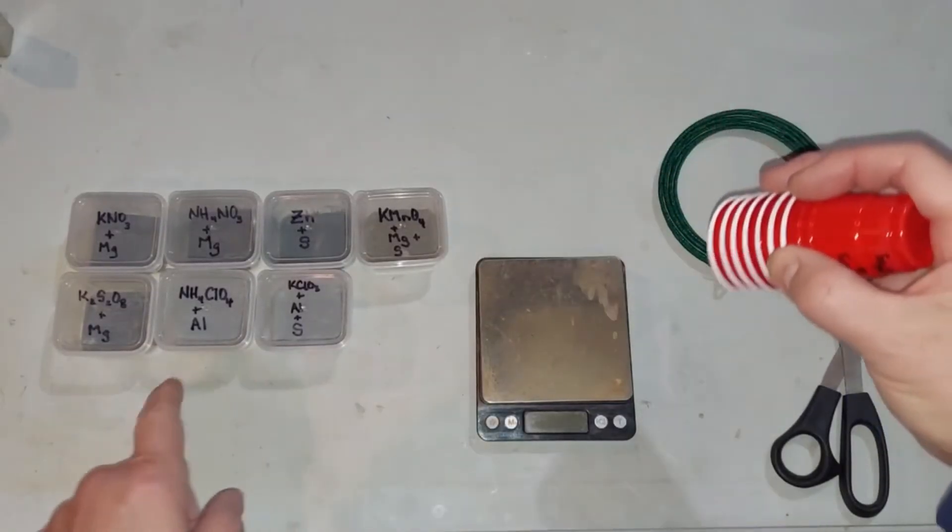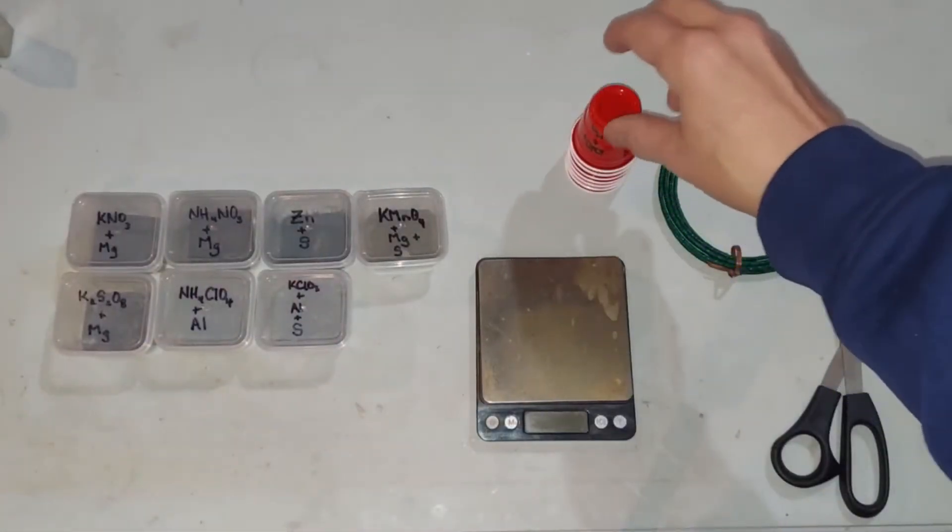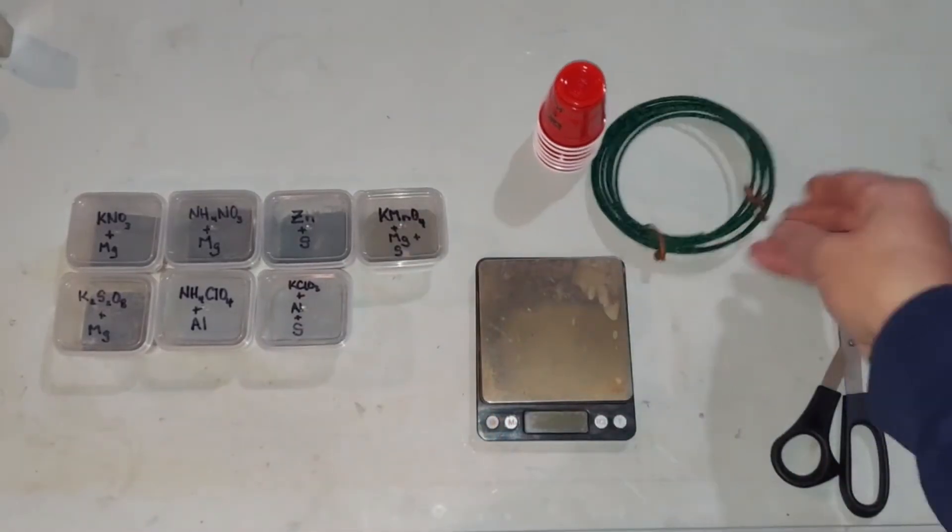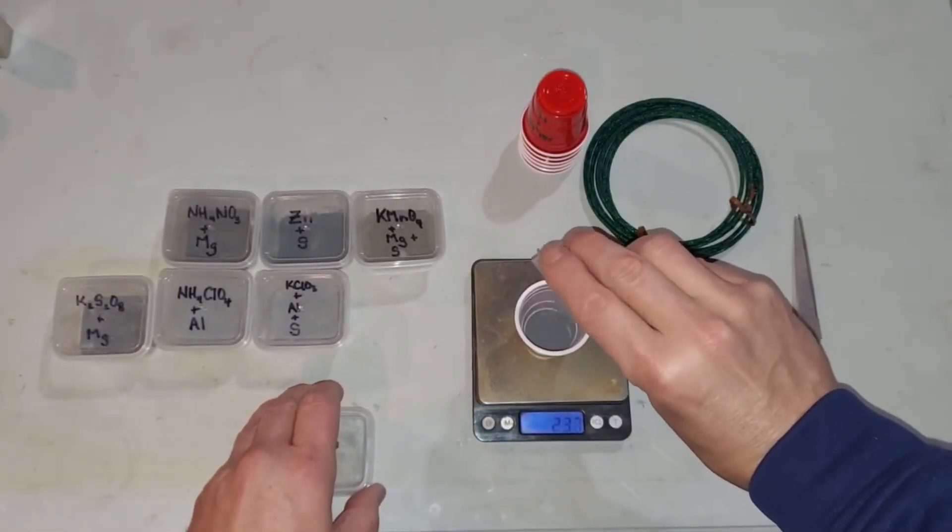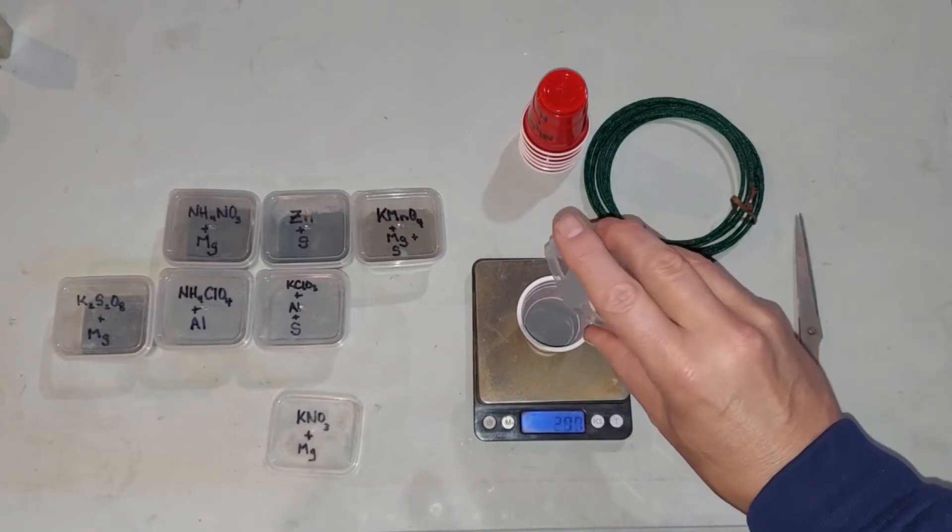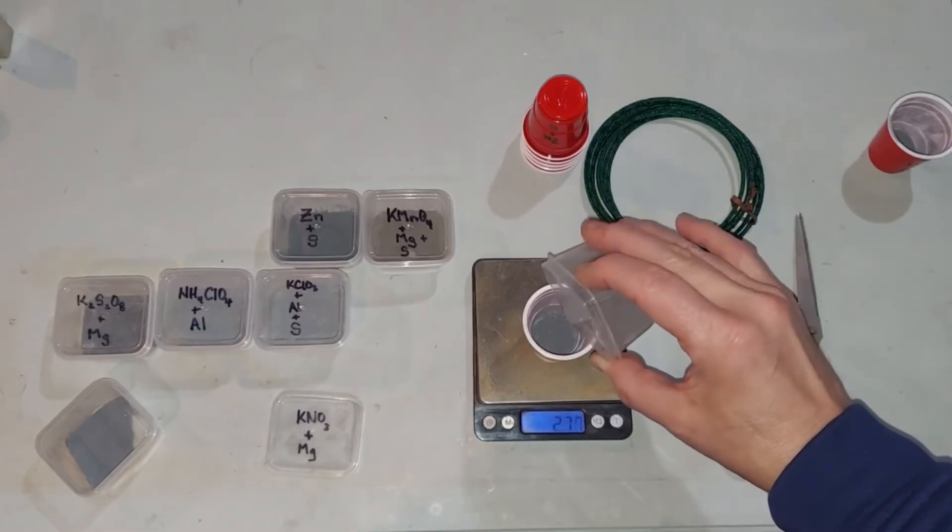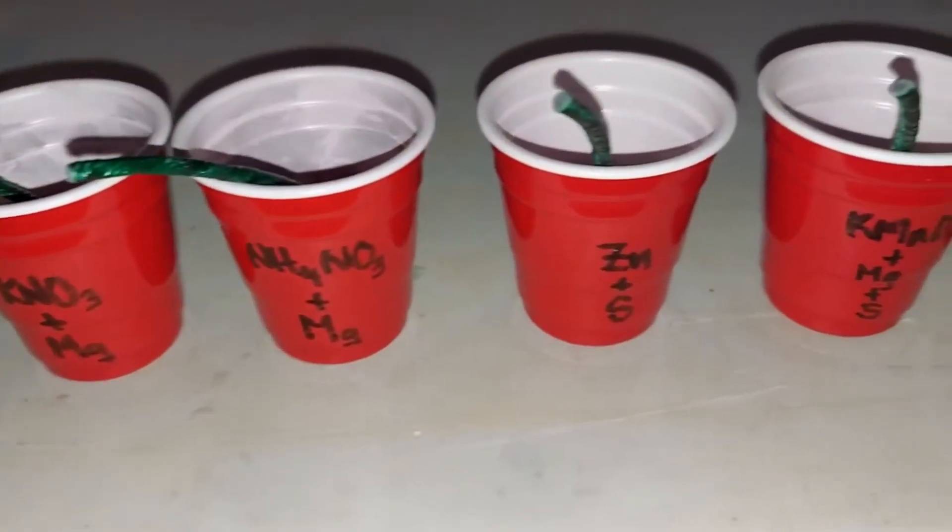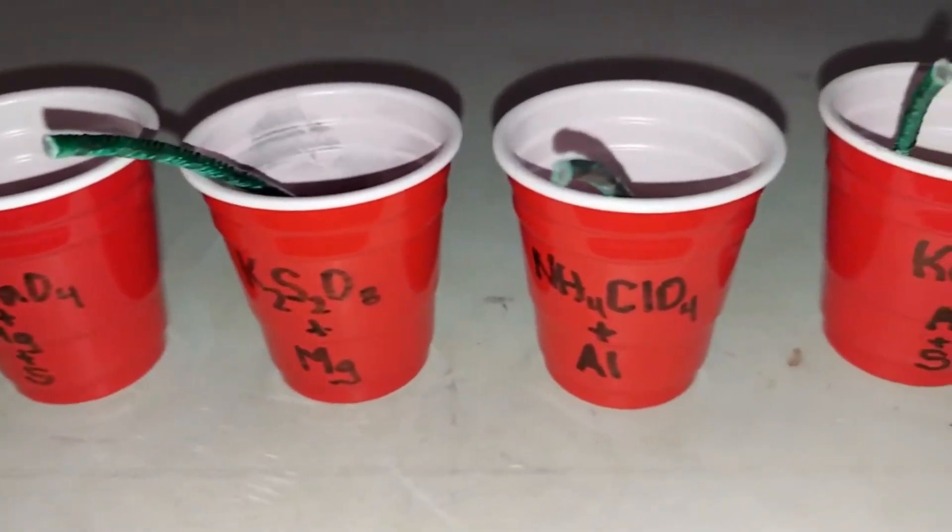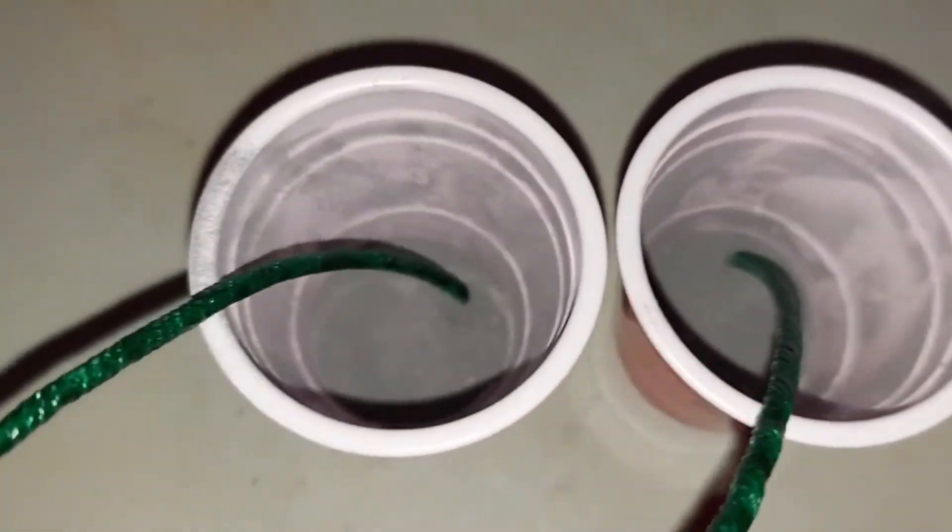I'll be measuring three grams of each of the flash powders into cups which are labeled with each one of them, so there's an equal amount in every one. Then I'll be cutting seven pieces of this cannon fuse and sticking it in the top of the cups so it's all even. And we'll see how it goes. And finally the seven cups with fuses in them for the seven different flash powders. All right, we're going to go test them.